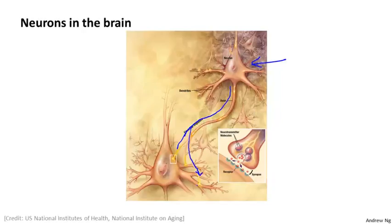And here, this axon, that is this output wire, connects to the input wire, connects to the dendrite of this second neuron over here, which then accepts this incoming message, does some computation, and may in turn decide to send out its own messages on its axon to other neurons. And this is the process by which all human thought happens. It's these neurons doing computations and passing messages to other neurons as a result of what other inputs they got.